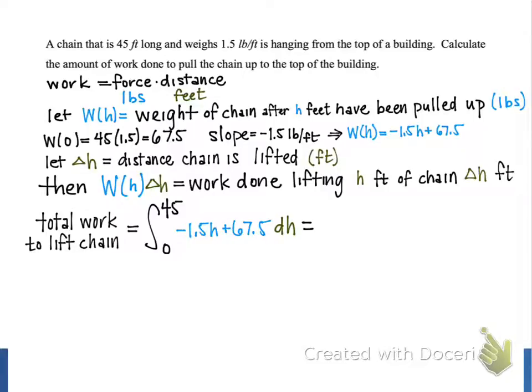Next, we need to find an antiderivative for our integrand, which results in -1.5h² / 2 using the power rule. And we also use that again for the next term, and we get 67.5h.